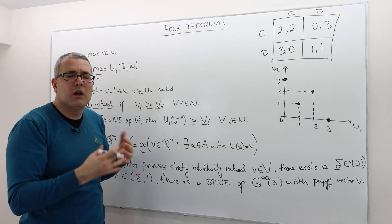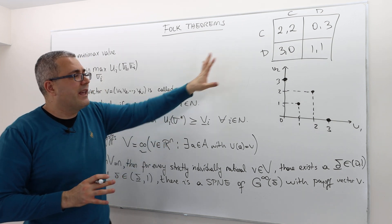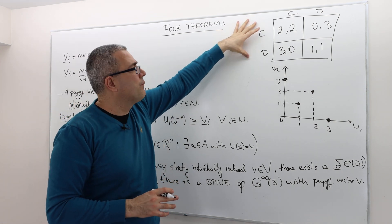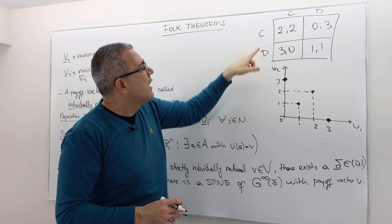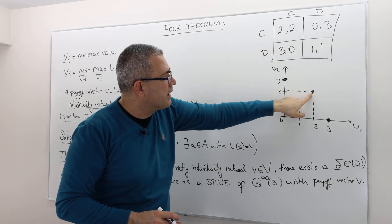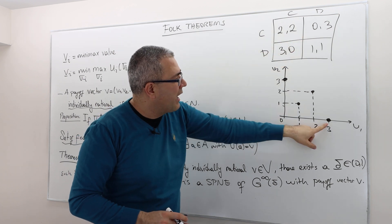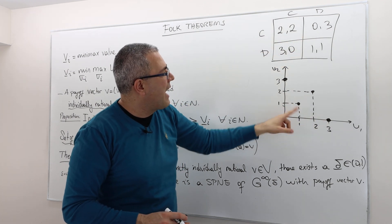Well, again, if this is a prisoner's dilemma, in this game, there are four pure strategy profiles, right: two, two, which is here, zero, three, and three, zero, here and here, and then one, one. So the convex hull of those four points is basically the minimum, smallest convex set that includes all those four points.